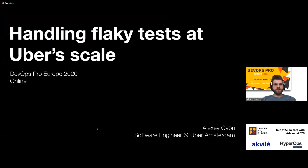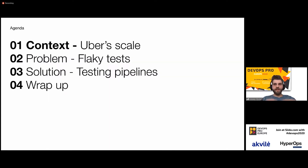I hope you can see my screen. I'm Alexei Gyuri from Uber, and I'm going to present about handling flaky tests at Uber scale at the DevOps Pro 2020 conference, which is going to be purely online. I want to start the presentation with the context — the scale of Uber and what we are operating at.